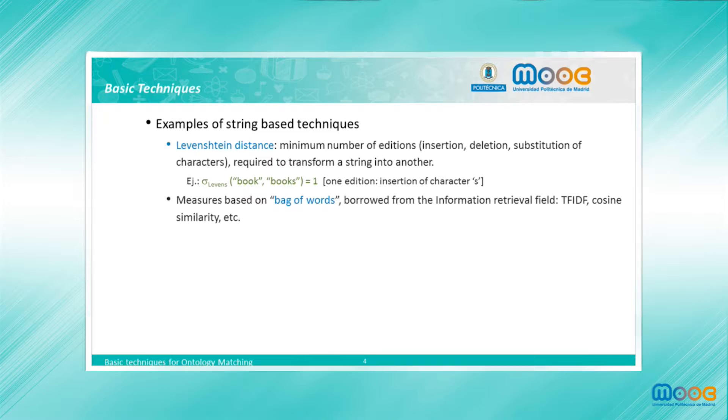There are other string-based techniques standardly used in ontology matching that consider the strings as a bag of words in order to apply certain techniques, certain metrics borrowed from the information retrieval field, such as TF-IDF or cosine similarity. But in addition to these two examples, there are many others such as Hamming, Jaro-Winkler, and many other distances and metrics that are used to measure the similarity between the strings in order to somehow infer similarity between the ontology entities.